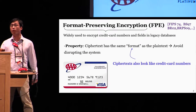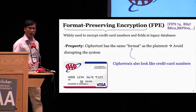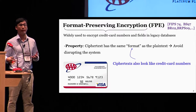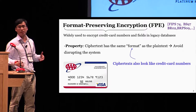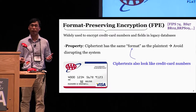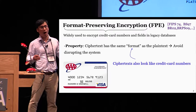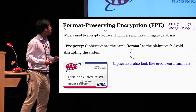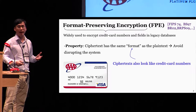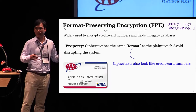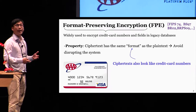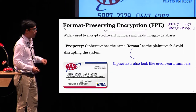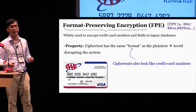Today I will talk about attacks on Format Preserving Encryption, or FPE. FPE is used in practice to encrypt credit card numbers or fields in legacy databases. In those legacy systems, the schemas mandate a certain format on the data. If you use an ordinary encryption scheme, you would destroy the format and disrupt the legacy system. In contrast, under FPE, the ciphertext will have the same format as the plaintext. For example, if you encrypt a credit card number, the ciphertext will also look like a credit card number, thus avoiding disrupting the legacy system.